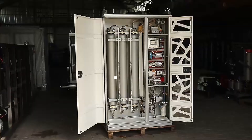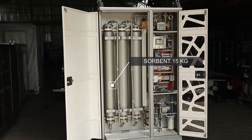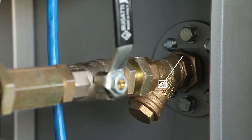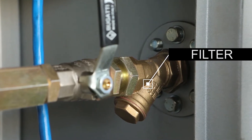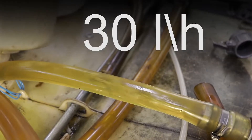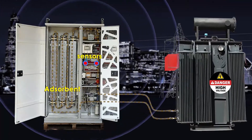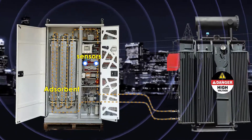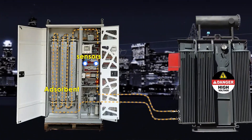The drying occurs by pumping the oil through three cartridges, each containing 15 kg of sorbent, while solid impurities are removed using a 10 micron filter. The flow rate is 30 liters per hour, and the oil is processed without shutting down the transformer, at any time of day, in any weather conditions, with or without the presence of service personnel.